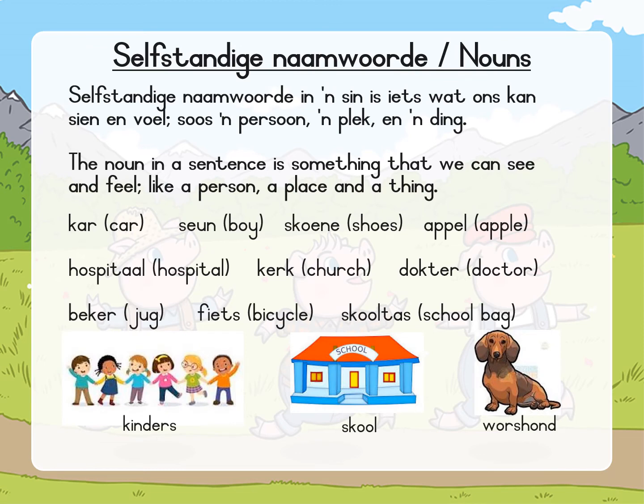Right, so now we have nouns. Selfstandige naamwoorde. Selfstandige naamwoorde in 'n sin is iets wat ons kan sien en voel, soos 'n persoon, 'n plek en 'n ding. The noun in a sentence is something that we can see and feel, like a person, a place and a thing.